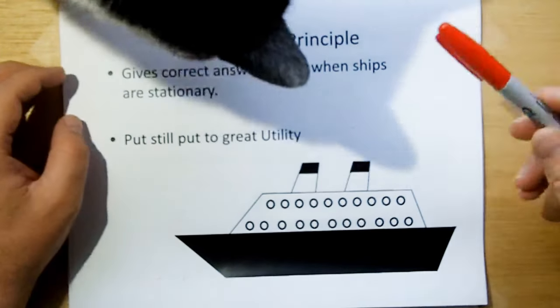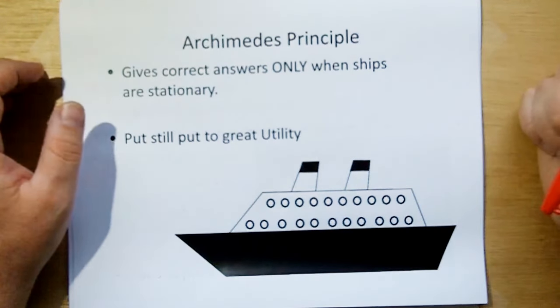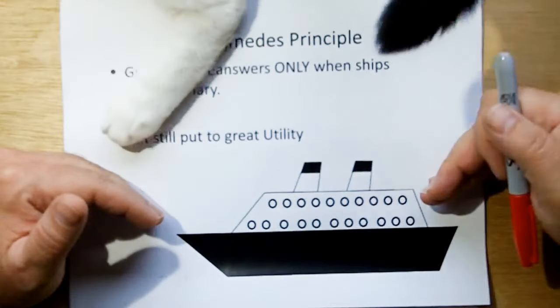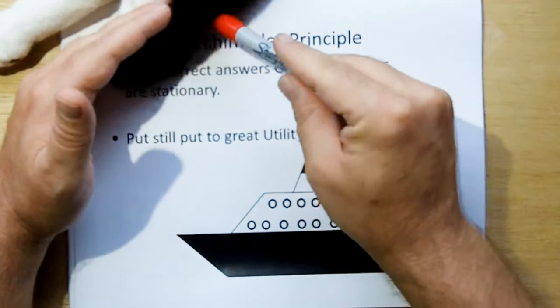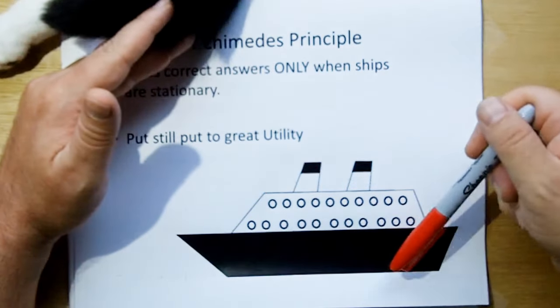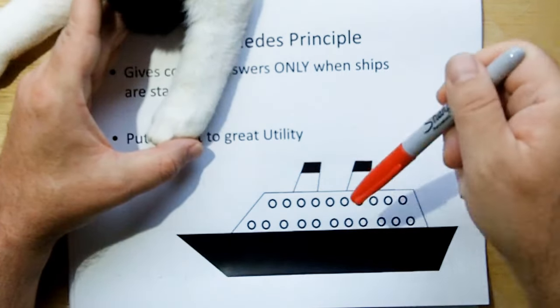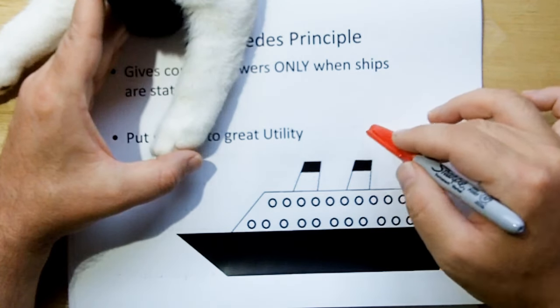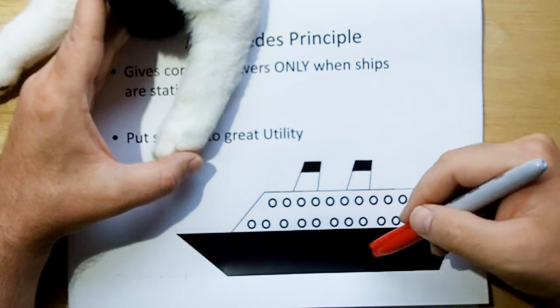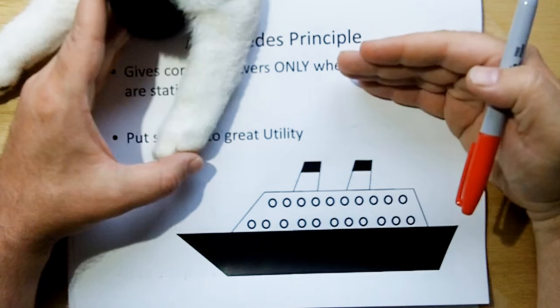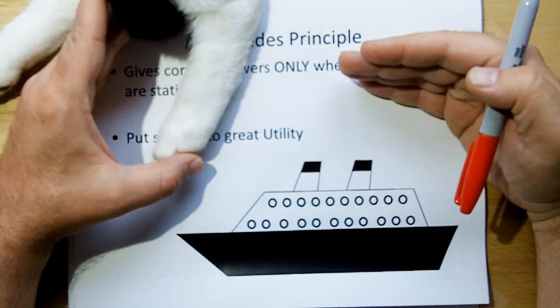Archimedes principle gives the correct answers only when ships are stationary. Once ships are underway, there's a squatting effect which causes the ship to sink down in the water. So in spite of the fact that the theory is wrong, it's good enough to develop bigger ships. We just had to learn how to figure out how they squatted. That became an anomaly which we used to develop new models. Pascal's pressure model and Bernoulli's principles. Those together explain all of buoyancy to include the squatting effect.